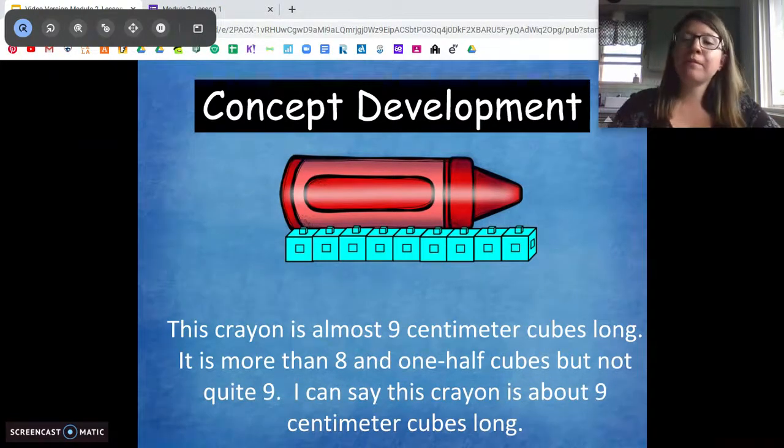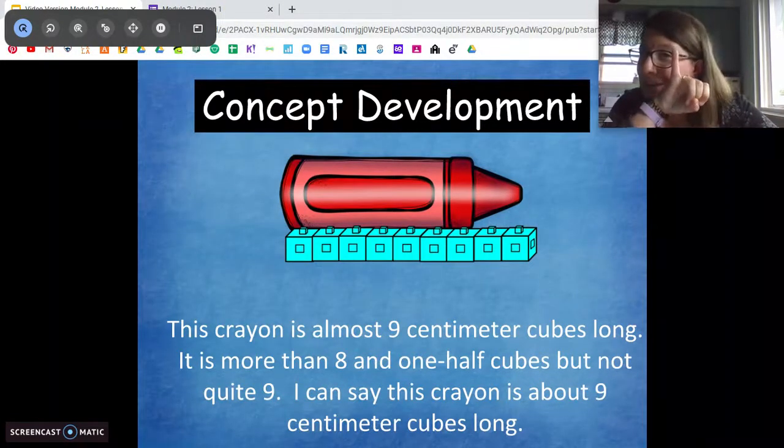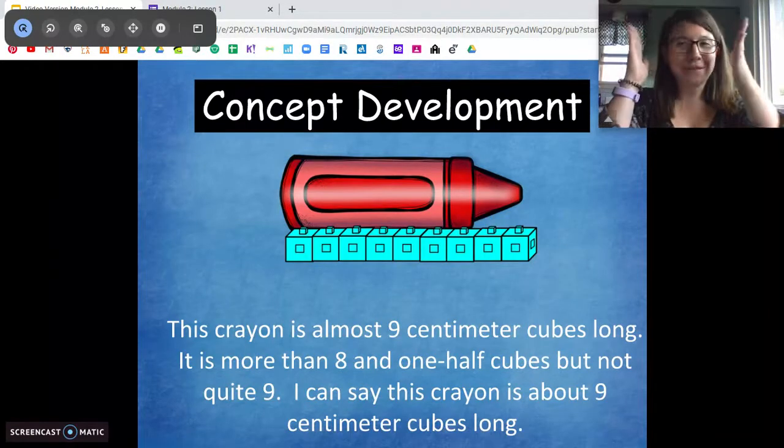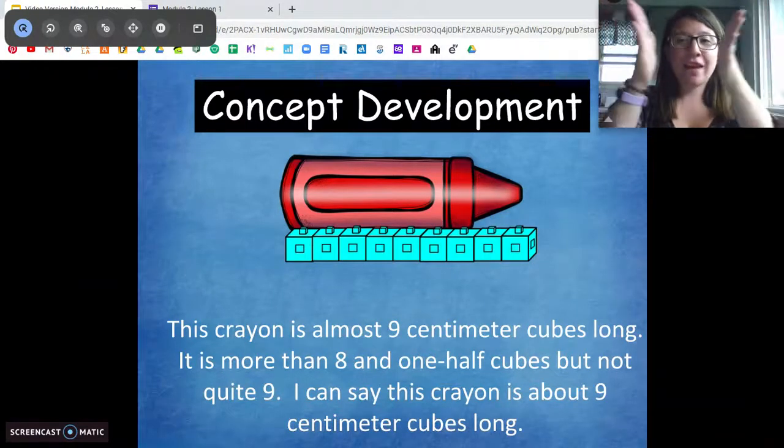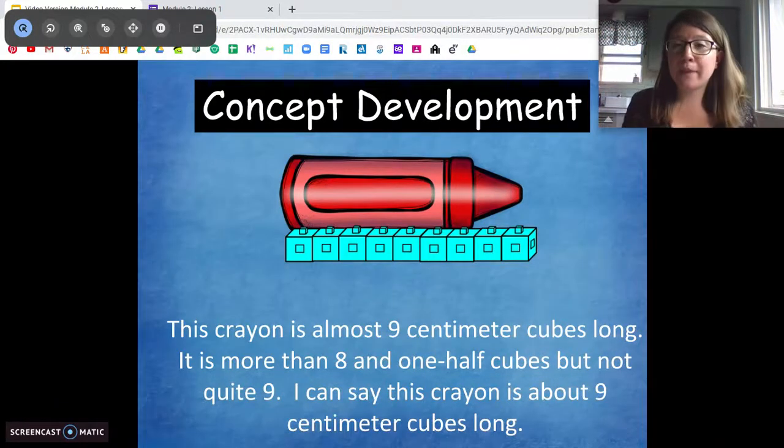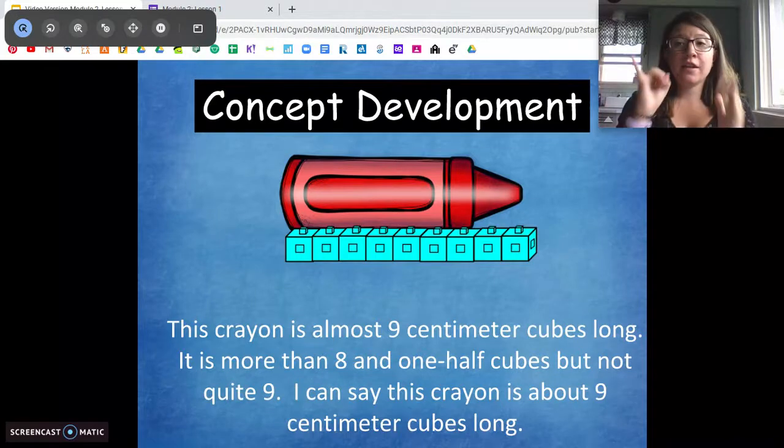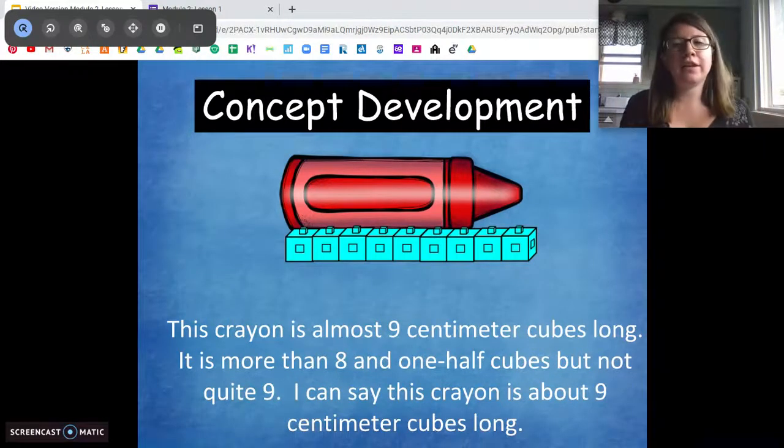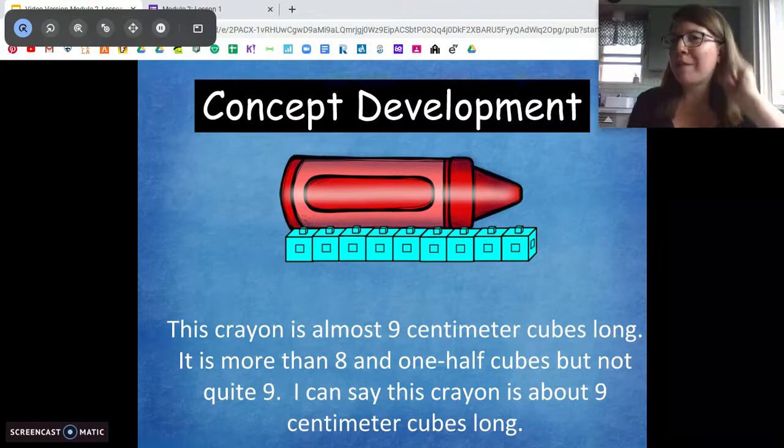So important things for today. Your pinky's about the size of a centimeter. We need to measure with our end points and there can be no overlap between our measuring tools. No matter if they're centimeter cubes, paperclips, whatever it is, there can be no overlap and no spaces. And if it's not exact, we can use that word about. Good job.